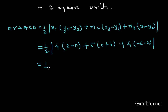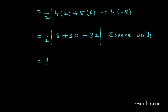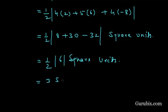Solving further: Area of ACD = (1/2) |4(2) + 5(6) + 4(-8)| = (1/2) |8 + 30 - 32| = (1/2) × 6 = 3 square units.